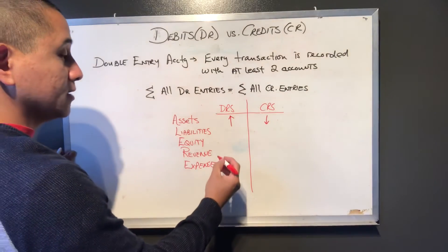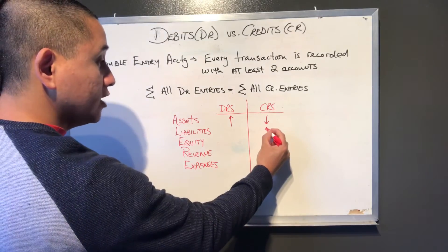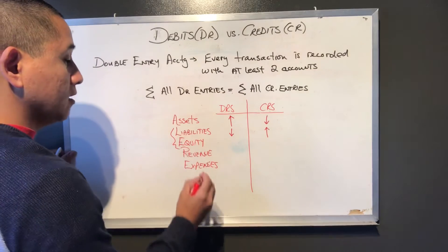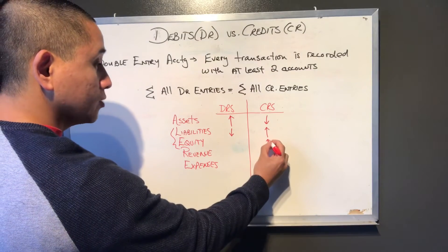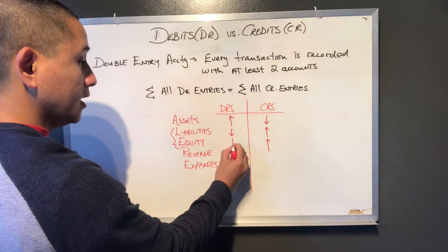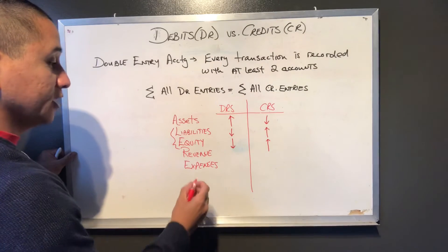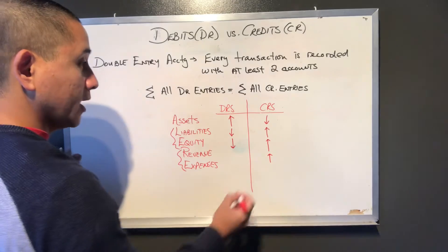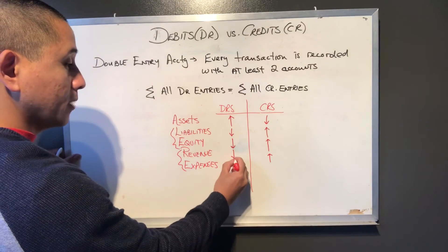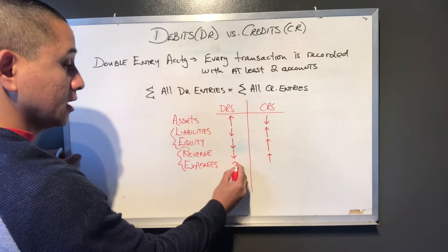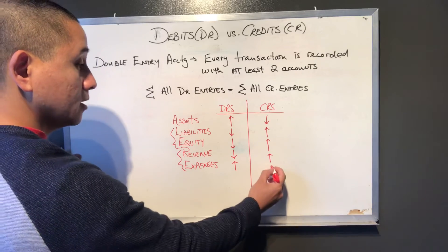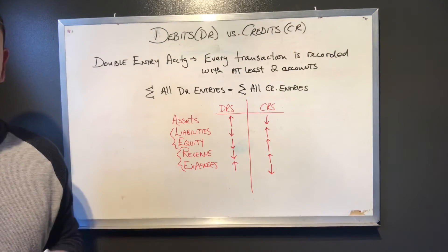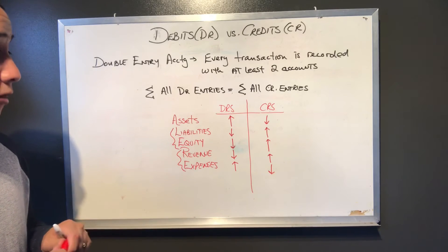Liabilities are on the other side — credits increase liabilities and debits reduce them. Liabilities and equity are similar in that credits increase equity and debits decrease equity. For revenue on the income statement, you increase it with credits and reduce it with debits. Expenses are increased by debits and reduced by credits.